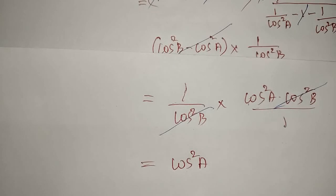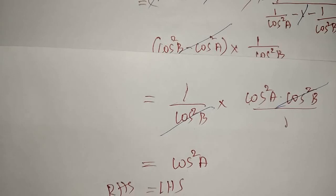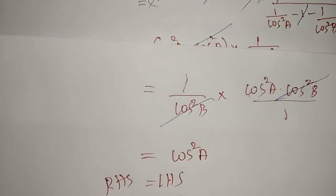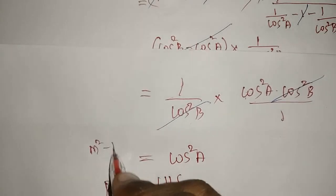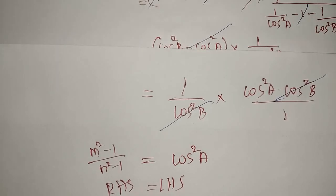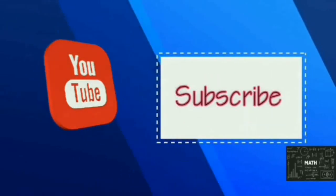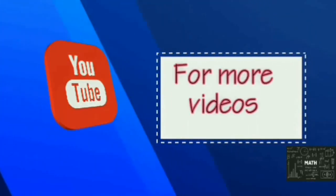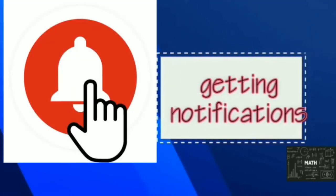This is what they asked us to prove — the left-hand side is cos²A, and we obtained cos²A from the right-hand side. So (m²-1)/(n²-1) = cos²A is proved. That's the required answer. Thank you for watching — please subscribe and press the bell icon for notifications.